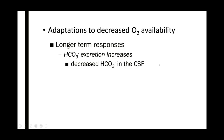Now for longer-term responses. First, in response to the respiratory alkalosis, the kidney within 24 to 48 hours will respond by increasing the excretion of bicarbonate — so you're peeing more bicarb out. By losing this basic compound you're acidifying the blood, getting rid of bicarb to bring the pH back to normal. The kidney's response to alkalosis is to increase the excretion of bicarb.